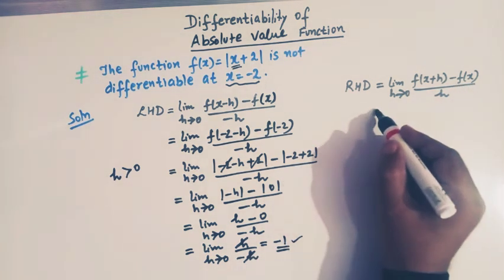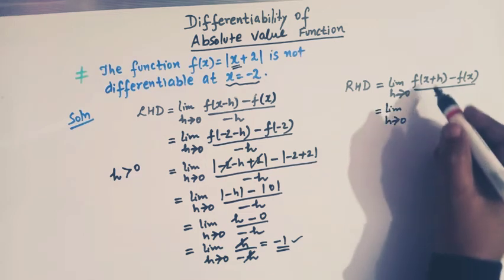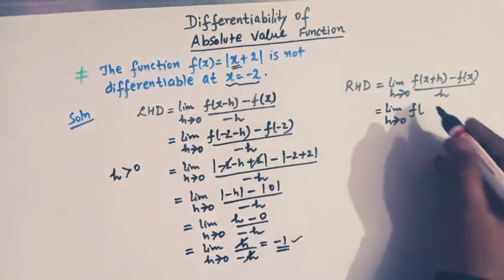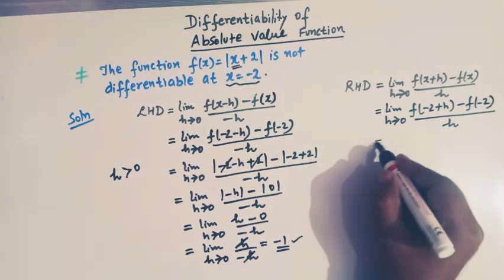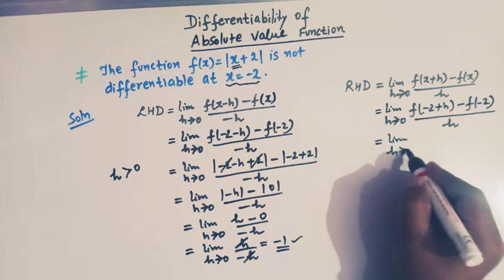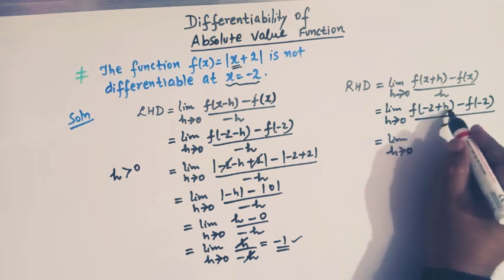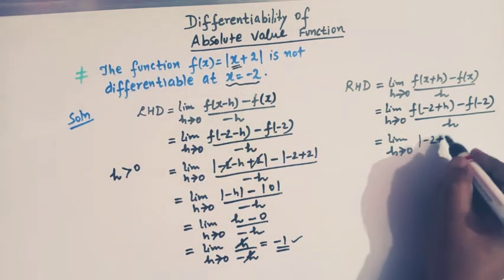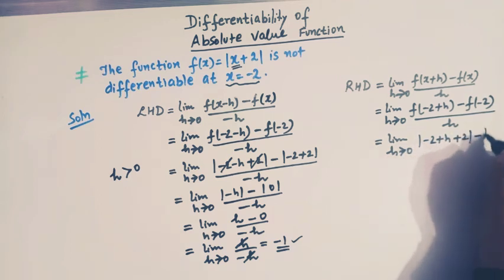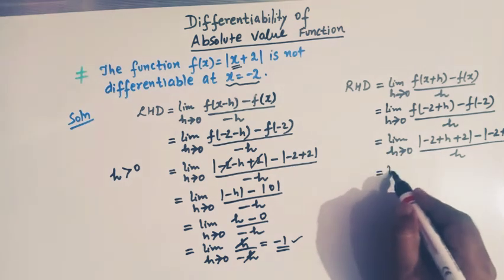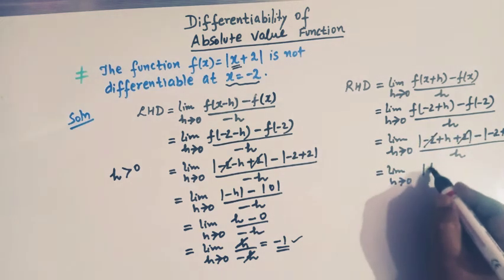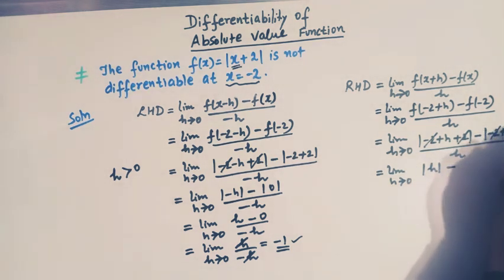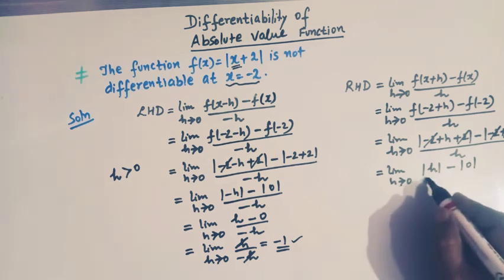Now let us find the right-hand derivative. This is limit h→0 of [f(-2 + h) - f(-2)] / h. For f(-2 + h) we write |-2 + h + 2|, minus |−2 + 2|, divided by h. Simplifying the numerator: -2 + h + 2 gives |h|, and the second term becomes |0| which cancels, leaving |h| / h.